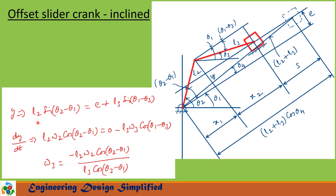Now let us differentiate the equation Y with respect to time t. L2 sine(theta 2 minus theta 1) equals E plus L3 sine(theta 1 minus theta 3). After differentiating with respect to time, this becomes L2 omega 2 cos(theta 2 minus theta 1) equals 0 — E is constant, so its differentiation is 0 — minus L3 omega 3 cos(theta 1 minus theta 3). From this equation, we can find the angular velocity of the coupler link: omega 3 equals minus L2 omega 2 cos(theta 2 minus theta 1) divided by L3 cos(theta 3 minus theta 1).